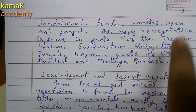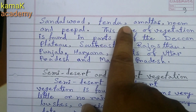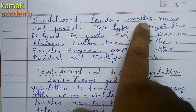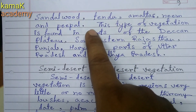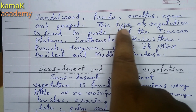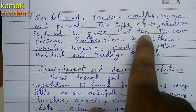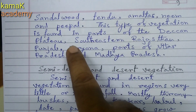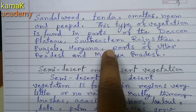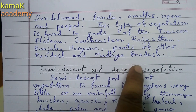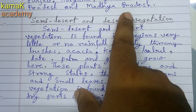Next page is page number 9. Continuing dry deciduous forest trees: Sandalwood, Tindu, Amaltas, Neem and Peepal. This type of vegetation is found in parts of the Deccan Plateau, southern Rajasthan, Punjab, Haryana, and parts of Uttar Pradesh and Madhya Pradesh.